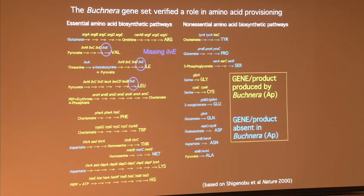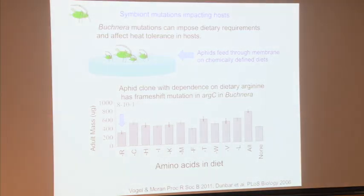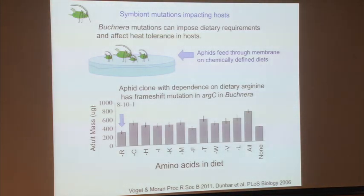There's a couple of missing things — the last gene in branched-chain amino acid biosynthesis was missing, hypothesizing that maybe the aphid provided that step of the pathway, and it turns out that looks to be true. I'll show you some data from the aphid end later. Mostly it's a very crisp pattern.